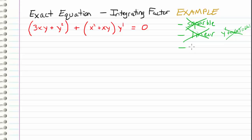Therefore, we cannot use the methods we've learned for equations of the form y prime plus a of x equals b of x. We also see that we cannot express y prime as a function of y over x in order to turn it into a homogeneous equation using a change of variables. So what we're left with is to determine if this is an exact equation, and if it is, we can use the methods from the previous videos. Let's go ahead and test that.